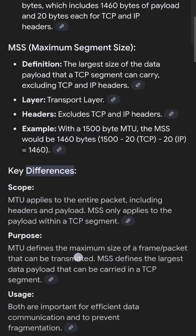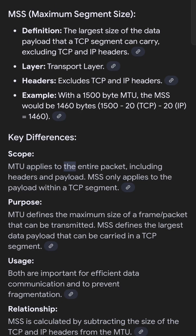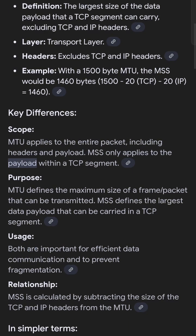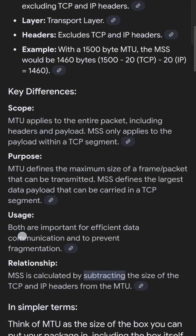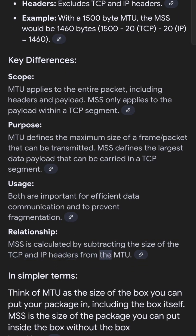Key Differences: Scope — MTU applies to the entire packet, including headers and payload; MSS only applies to the payload within a TCP segment. Purpose — MTU defines the maximum size of a frame or packet that can be transmitted; MSS defines the largest data payload that can be carried in a TCP segment. Usage — both are important for efficient data communication and to prevent fragmentation. Relationship — MSS is calculated by subtracting the size of the TCP and IP headers from the MTU.